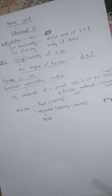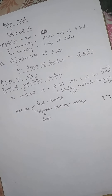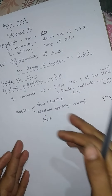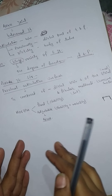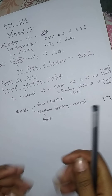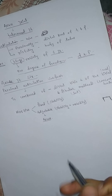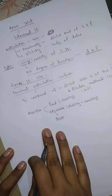The proximal and distal tibiofibular joints are anatomically distinct but functionally linked. Now we are going to discuss about the proximal tibiofibular joint.